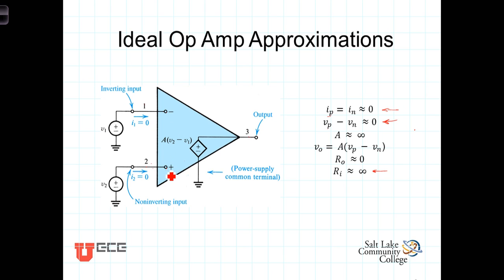It's not exactly equal to zero, but it's very close when the amplifier is operating in its linear region. The next ideal op-amp approximation is that the gain term — the scalar that multiplies the difference voltage V2 minus V1 — is very, very large. We assume it approaches infinity. In reality, the gain is on the order of 50,000 to 100,000. When you take a very large number and multiply it by a very small number, you get a reasonably sized output — meaning the output will fall between the power supply voltages.